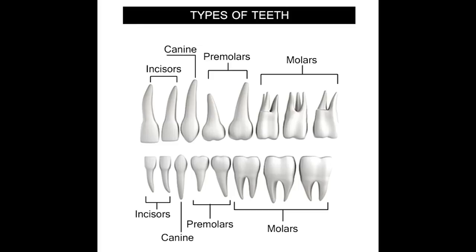Teeth are considered to be a part of the skeletal system, though they are not considered to be bones. They play a vital role, as the digestion of food starts in the mouth with the mastication of food by our teeth. Teeth also help in the articulation of speech. Therefore, attention must be paid to oral hygiene. Damage to the enamel and dentin can cause damage to the living pulp tissue. One should brush and floss the teeth regularly to prevent the formation of plaque, and it is advisable to visit a dentist at regular intervals.